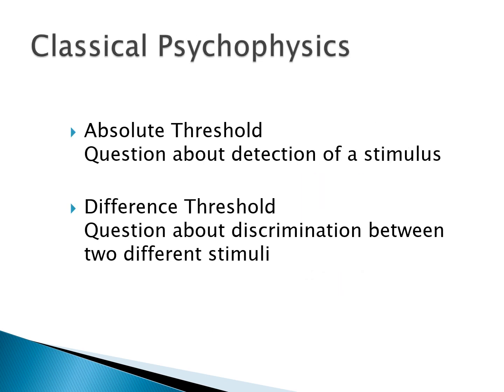Our classical psychophysical methods have all been measuring the absolute threshold — the question about detection of a stimulus, what's the minimum amount of stimulus energy required for you to say that you experience it. Another threshold they have looked at is the difference threshold, which is a question about discrimination between two different stimuli: how different do two stimuli have to be for you to say yes, I can hear or feel that there's a difference?